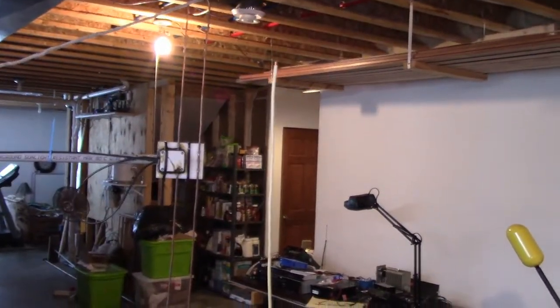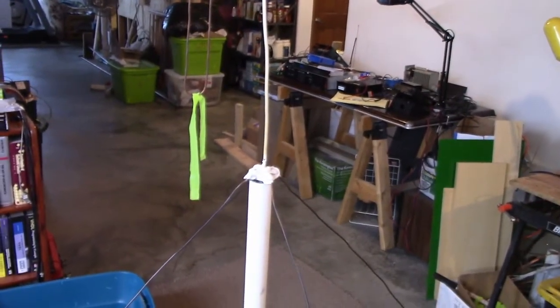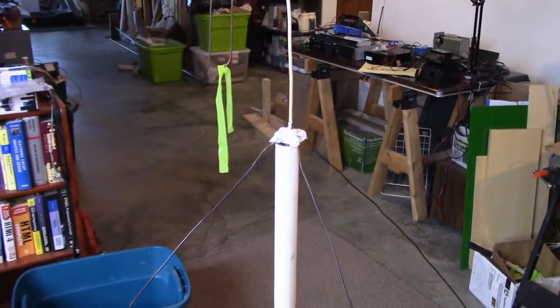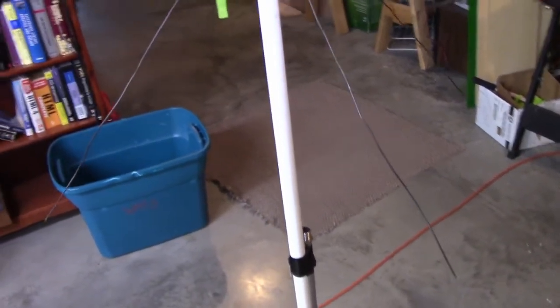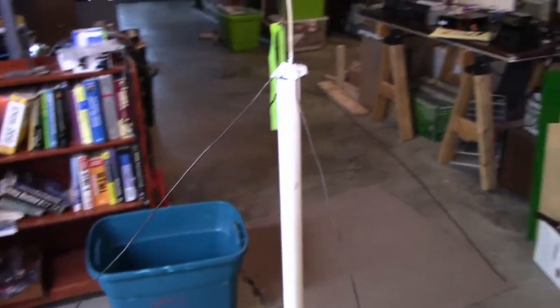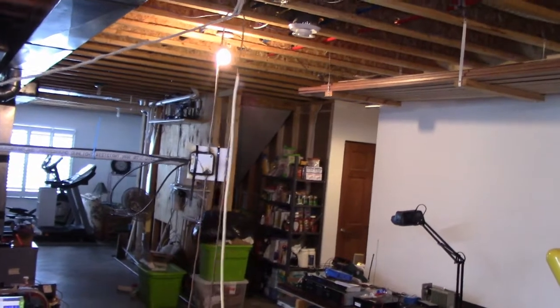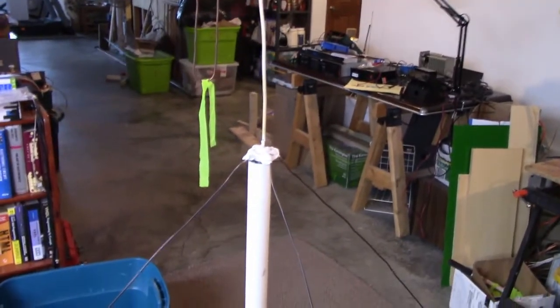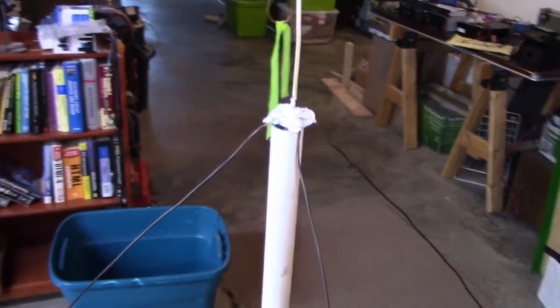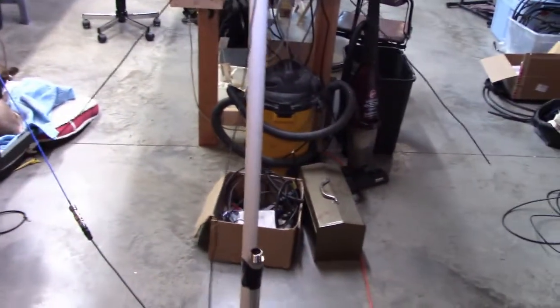Today we're going to be building a VHF vertical made out of an SO-239 or UHF female connector. And this is the original one that I built back in the 1990s. It's also the one that I used to speak to the Mir space station on. Very simple, just a piece of number 12 copper wire down to the SO-239 and then four pieces of copper wire to make for the ground plane.